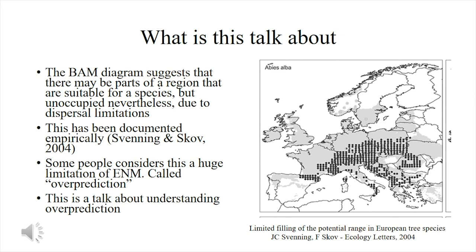The problem I will be discussing is what some people refer to as over-prediction. That means that when you do a niche modeling and you project it into geography, often you get a larger prediction than what is observed in the data. To the right of the slide there is one classic example presented by Svenning and Skob — the distribution of a fern in Europe. The points are the observations and the gray area is what the niche model predicts, and as you can see it looks larger than the data.